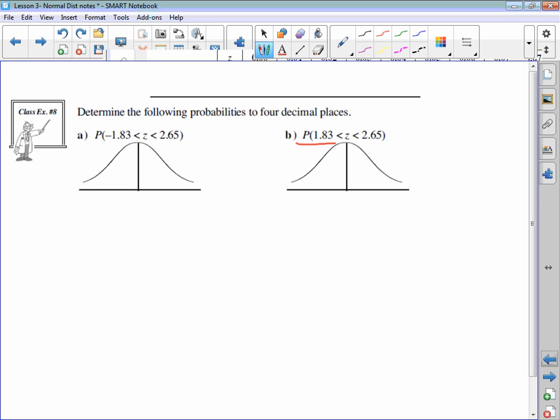For this one, P is the probability that z is between 1.83, which is going to be somewhere like here, and 2.65. So we're looking for this area. What we need to do is we've got to find both of the areas. We've got to find the probability that z is less than 1.83 and the probability that z is less than 2.65. We always do less than because that's what our table tells us.